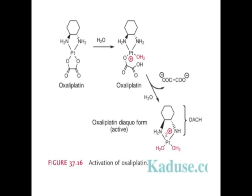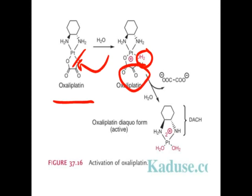Another example of an organoplatinum complex is oxaliplatin. Similar to what happens in cisplatin: when water molecules come in, they break the existing bond, and the water molecule binds directly to the platinum, giving it a positive charge — this is called oxaliplatin monoaqua form. In the second step, the oxalate group leaves as COO⁻ COO⁻ and the second water molecule binds to the platinum, giving oxaliplatin diaqua form with a +2 charge.